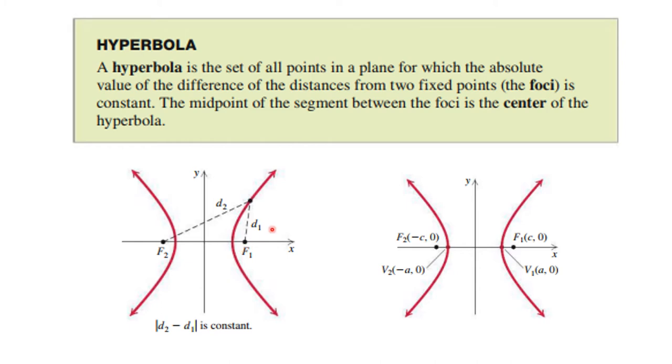Instead of getting an oval, you get a figure that looks like this, where the difference between d2 and d1 in this picture is a constant. The midpoint of the segment between the foci is called the center.